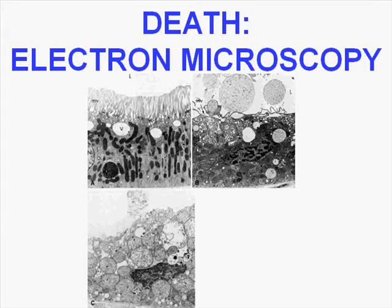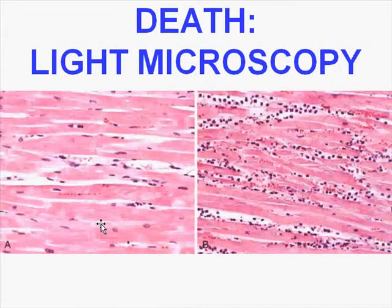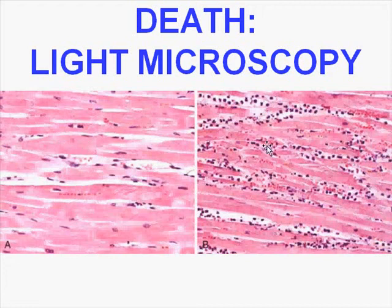At the light microscopy level, consider a normal myocardium — you can see nuclei and capillaries. One of the first things that happens in death at the light microscopic level is loss of nuclei. Once that tissue is dead, it acts as a trigger for acute inflammation, resulting in infiltration of neutrophils and loss of nuclei. These are early changes, though not quite as early as what you'd see on electron microscopy.